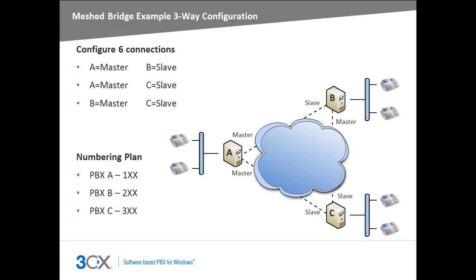To achieve this setup: PBX A is master and PBX B is slave in the A-to-B connection; PBX A is master and PBX C is slave in the A-to-C connection; and PBX B is master and PBX C is slave in the B-to-C connection.